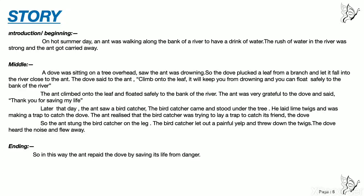Now the ending part: 'In this way, the ant repaid the dove by saving its life from danger.' So we have three parts of the story — introduction, middle and ending. In the middle portion we have four paragraphs, but you don't have to worry about the number of paragraphs — you can write two, three or four paragraphs. The story should be related point-wise to the outline given, and don't add any new things that are not in the outline. Always write what is given in the outline.